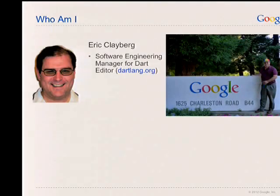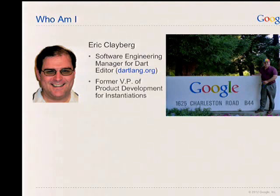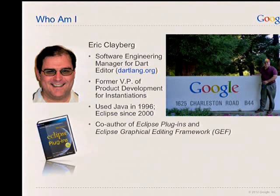A little bit about myself. My name is Eric Kleberg. I am currently a software engineering manager for the Dart Editor, which is part of the Dart language project at Google. I used to be VP of product development at Instantiations up until about two years ago when we were acquired by Google. I've used Java since '96, Eclipse since 2000, and co-author of two Eclipse books, Eclipse Plugins and Eclipse Graphical Editing Framework.